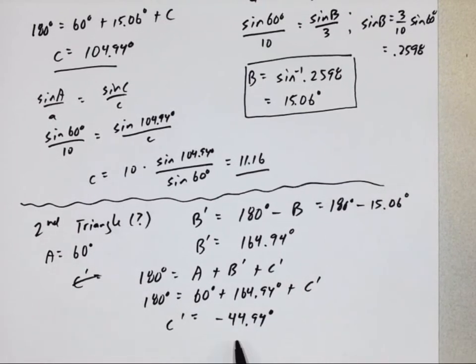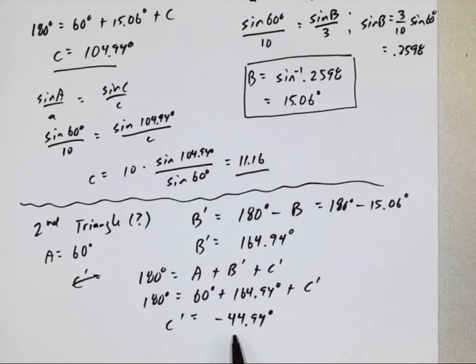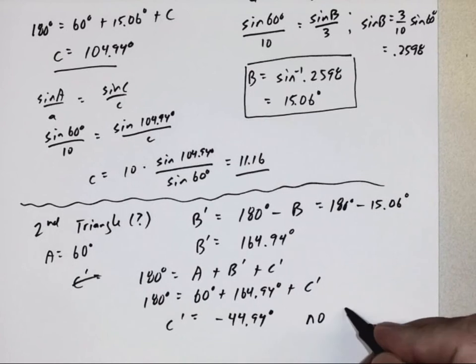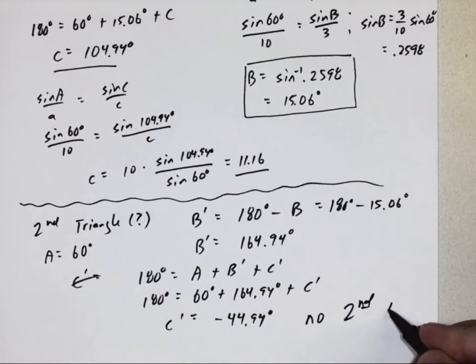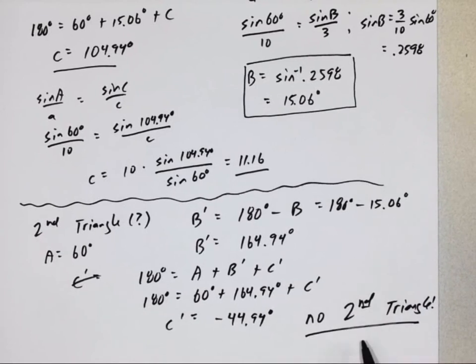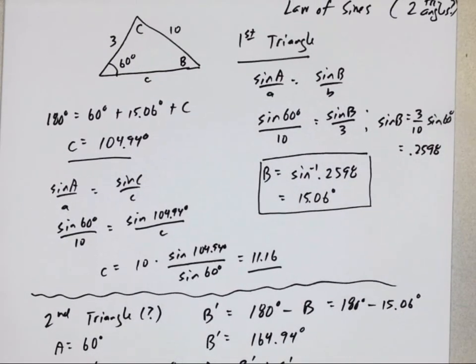All right, that's sort of interesting, this is saying for my second triangle, angle C would be negative 44.94, well, you know what, we can't have, we don't have negative angles, we don't have angles that measure as a negative number, so this means, there's no second triangle, so in this case, all you have is your first triangle.